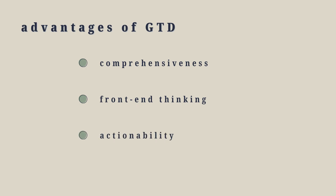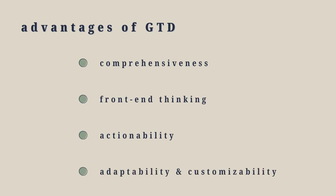Third, the focus on actionability — GTD breaks down every commitment and project into single, feasible action items, making them manageable and achievable. Finally, the adaptability and customizability. The Getting Things Done principles provide a robust foundation for a long-term productivity solution that can be tailored to your specific needs. To build a system that captures the essence of GTD and remains flexible for updates and improvements, I chose Notion.